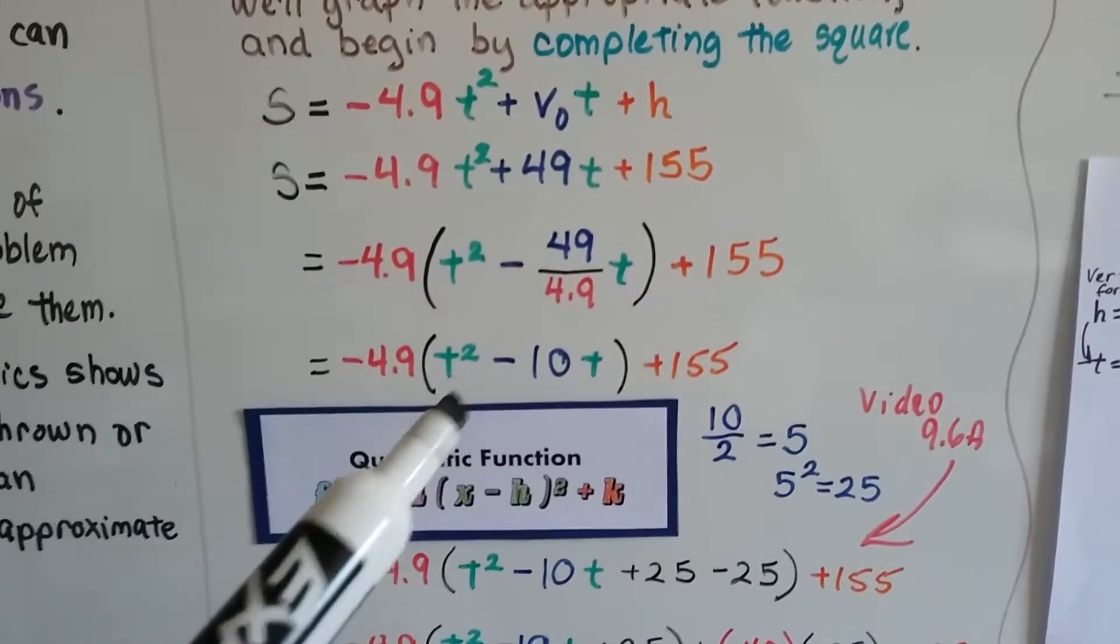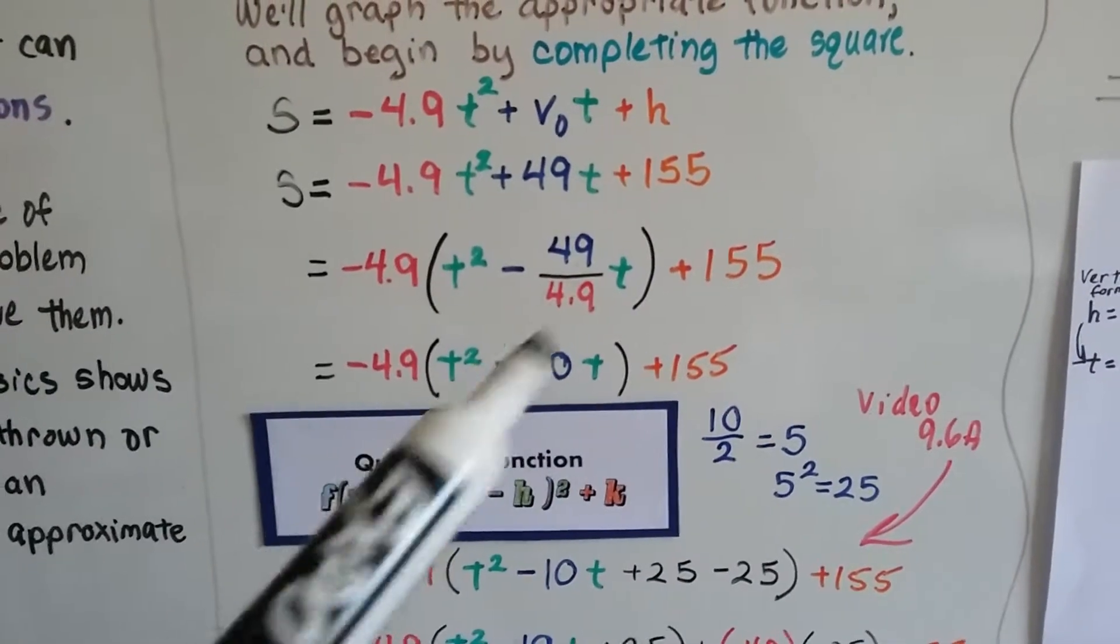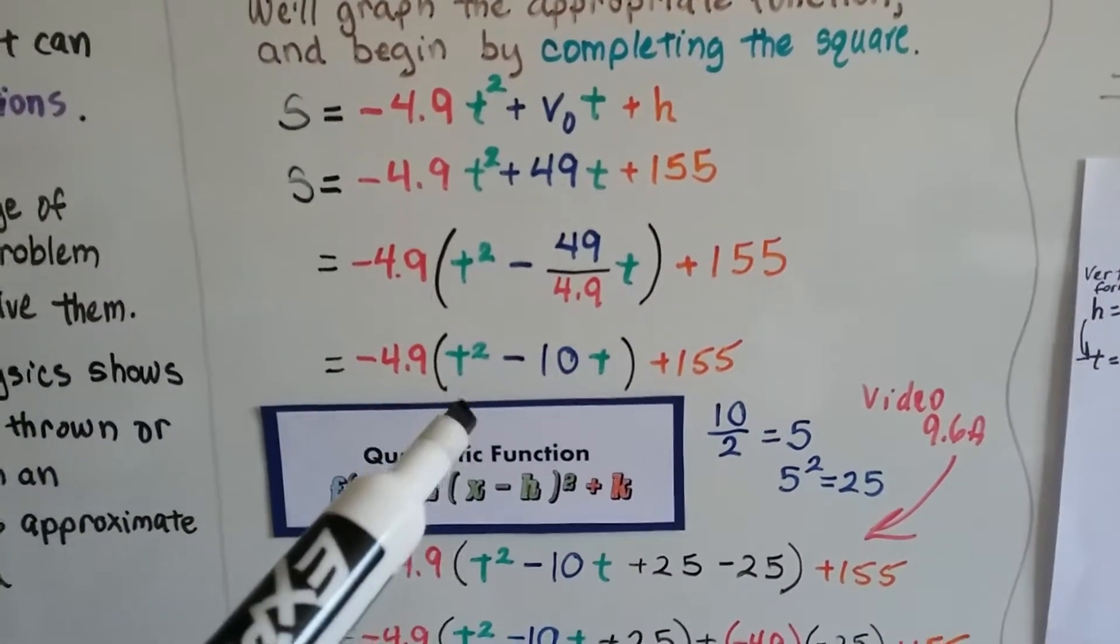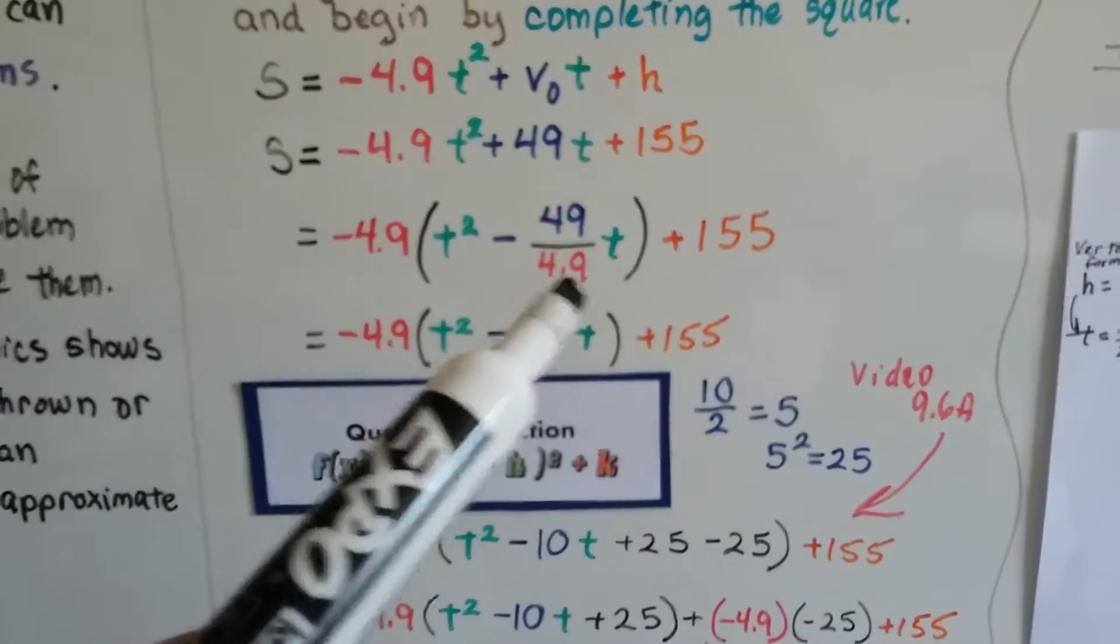We regroup it and divide it by that a value. Now we've got a negative 10t here. 49 divided by 4.9 is 10.